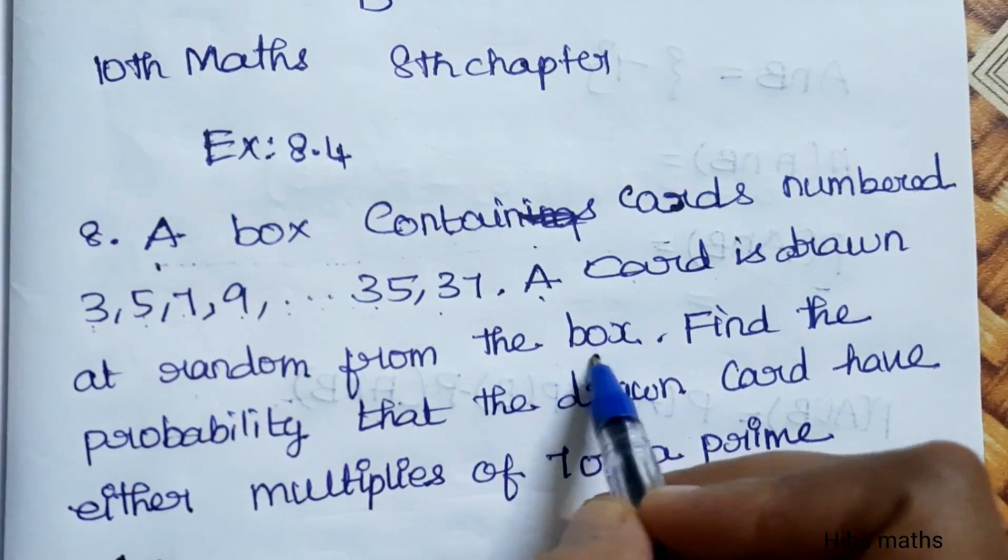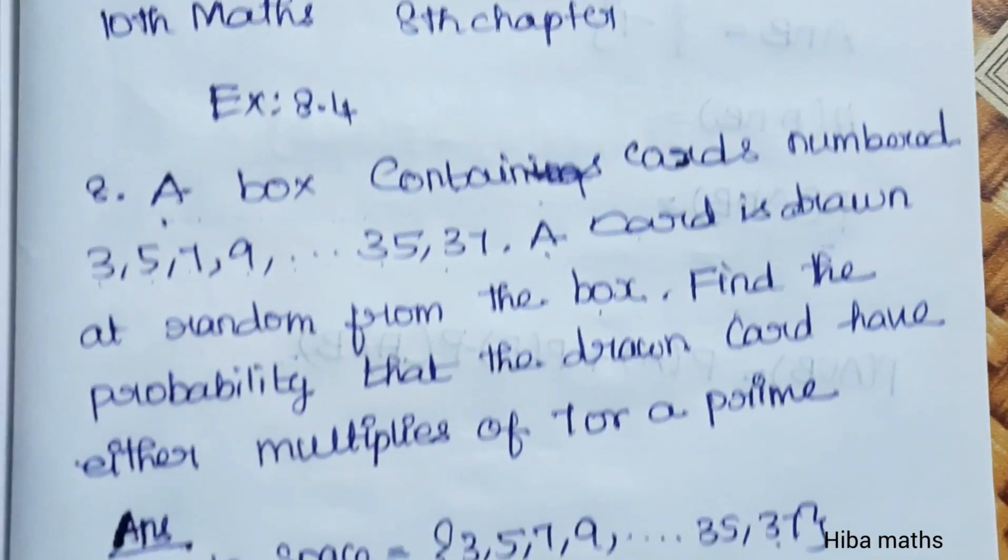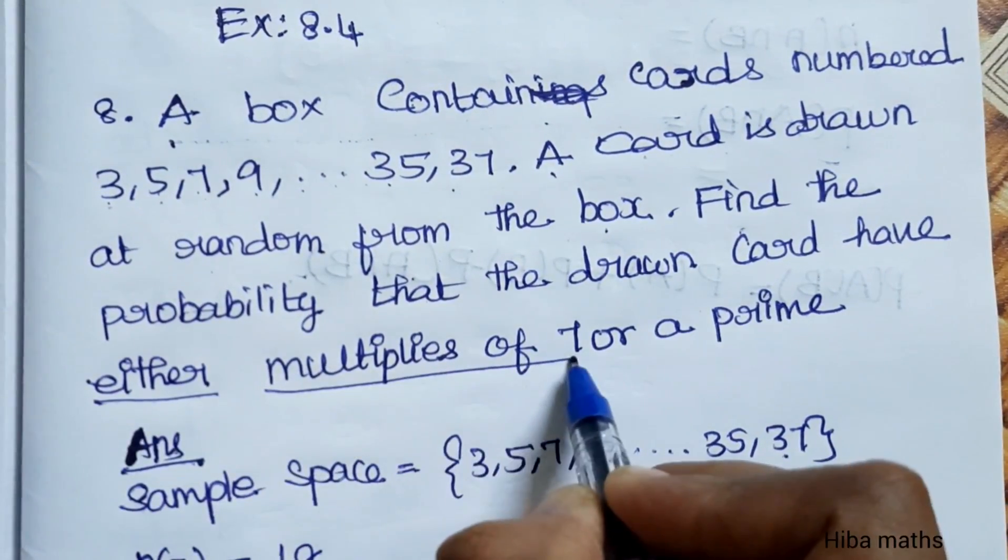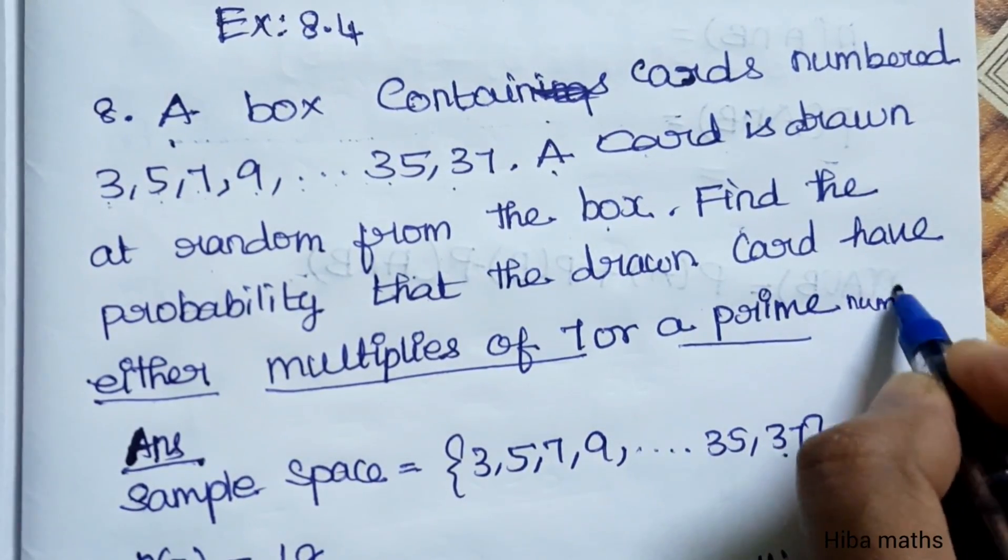A card is drawn at random from the box. Find the probability that the drawn card has either multiples of 7 or a prime number. Either prime or a multiple of 7.